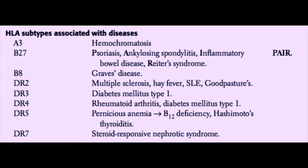Remember that MHC class 2 binds to the TCR and to the CD4 coreceptor. MHC class 1 and class 2 are inherited as a haplotype — they don't rearrange their genes like T cell or B cell receptors do. The pattern you're born with stays throughout your life, and this pattern can make you susceptible to certain diseases because of the peptide-binding nature of the MHCs. Some examples the boards like to use are the following.